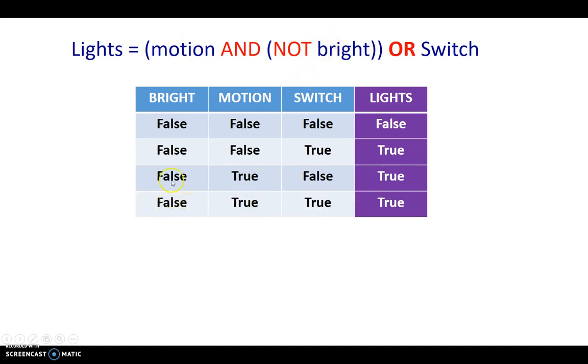Then we have a case where it's dark outside, there's motion outside, and the switch is also turned on. So both this set of conditions and this set of conditions are true, so true or true produces a true.